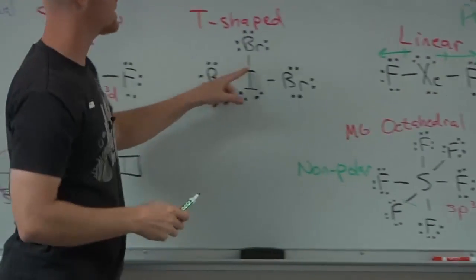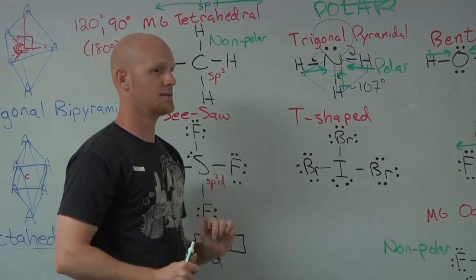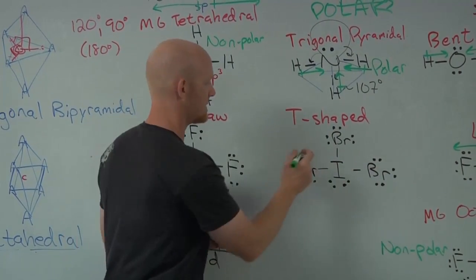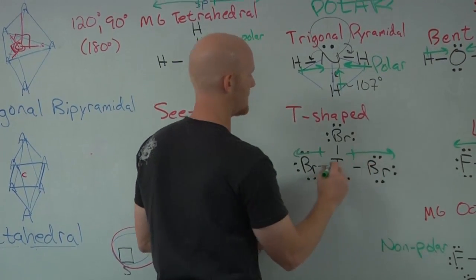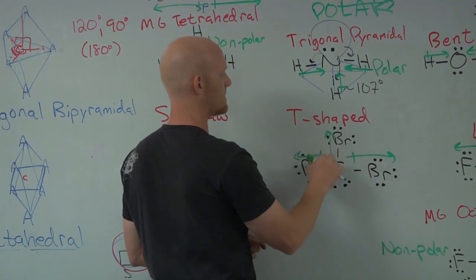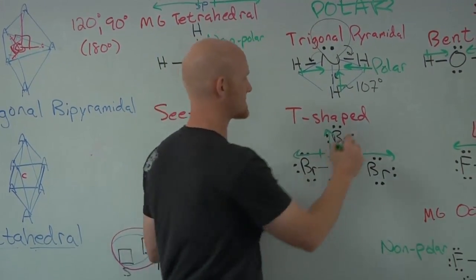So this one here, again, T-shaped. Well, if it's perfect T, then this guy cancels this guy because bromine is more electronegative, but there's nobody to cancel him out at all. And so this guy ends up being polar.